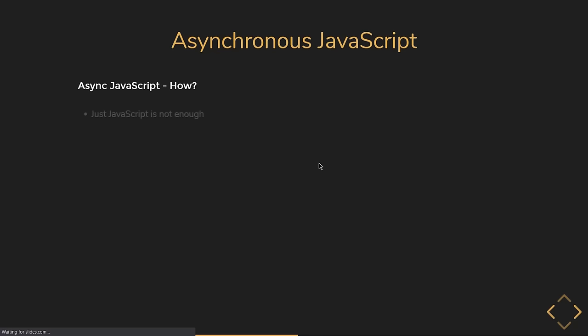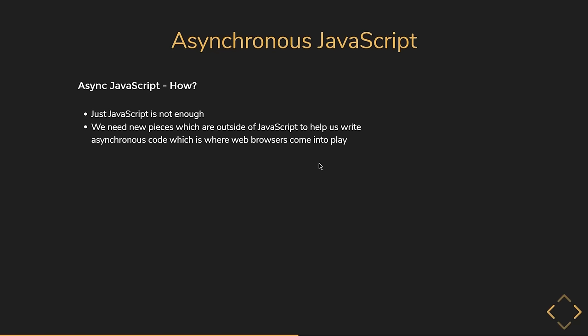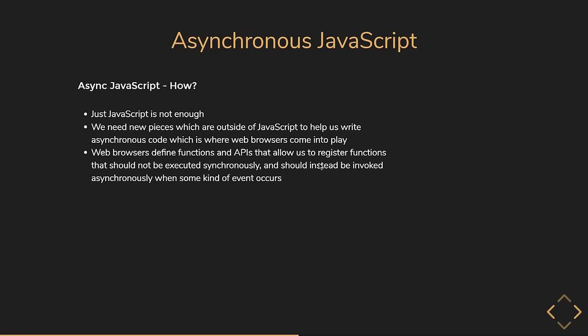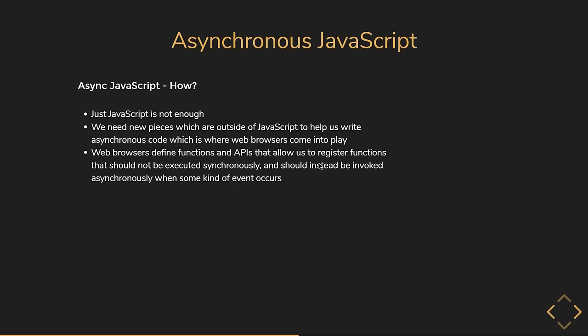How do we cater to asynchronous programming in JavaScript? Just JavaScript is not enough — we need new pieces outside of JavaScript to help us write asynchronous code, which is where web browsers come into play. Web browsers define functions and APIs that allow us to register functions that should not be executed synchronously, but instead be invoked asynchronously when some kind of event occurs — such as the passage of time, user interaction with the mouse, or the arrival of data over the network. This means you can let your code do several things at the same time without blocking your main thread.